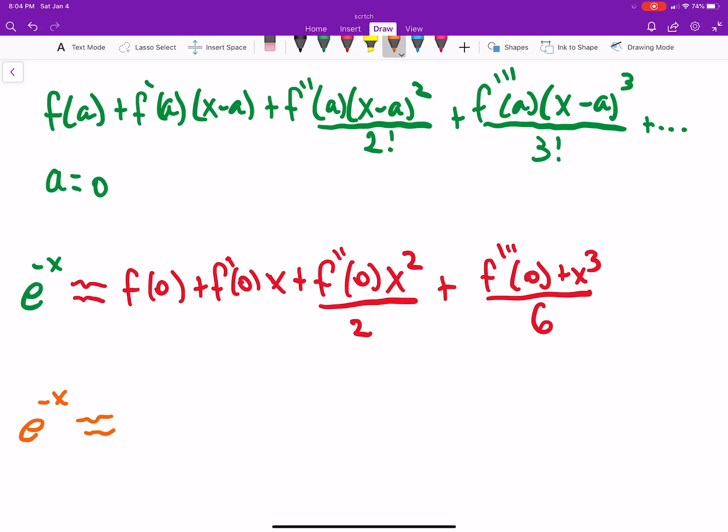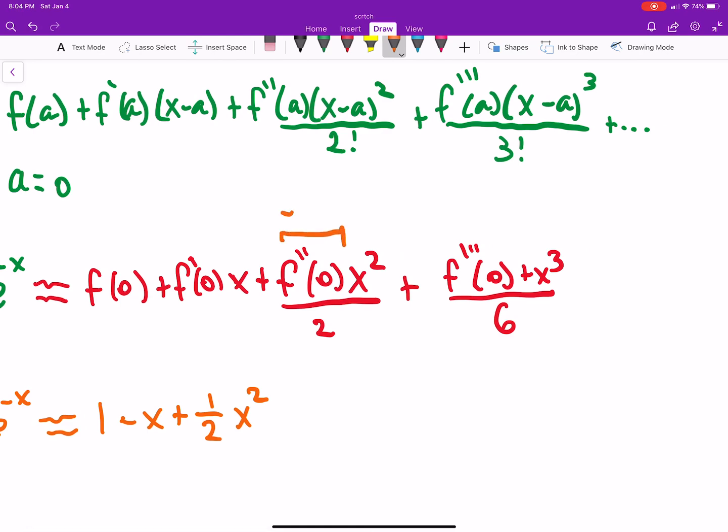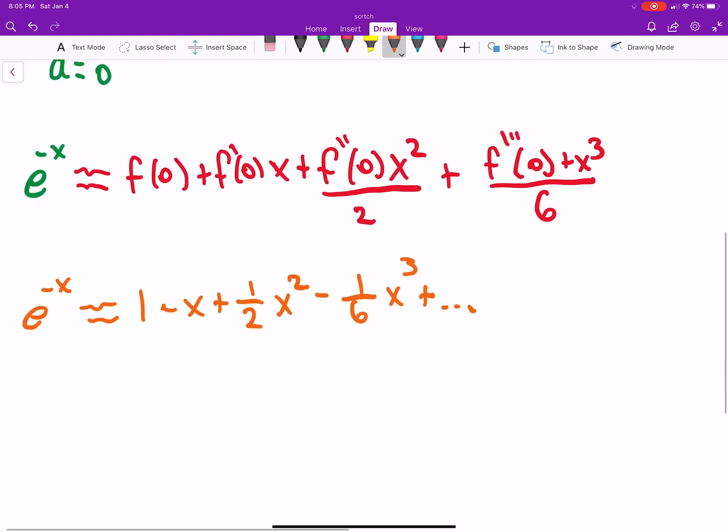f of zero is just one, and then if we take the derivative it's negative e to the minus x, so that'll be minus x plus the second derivative that'll give us x squared. So one half x squared, and that's because you're just going to get minus e to the minus x. In this case it's going to be positive because when we took the derivative, when you take it again, this turns positive by the chain rule. So we have this alternating signs. Minus one sixth x cubed plus dot dot dot. So that's our approximation.